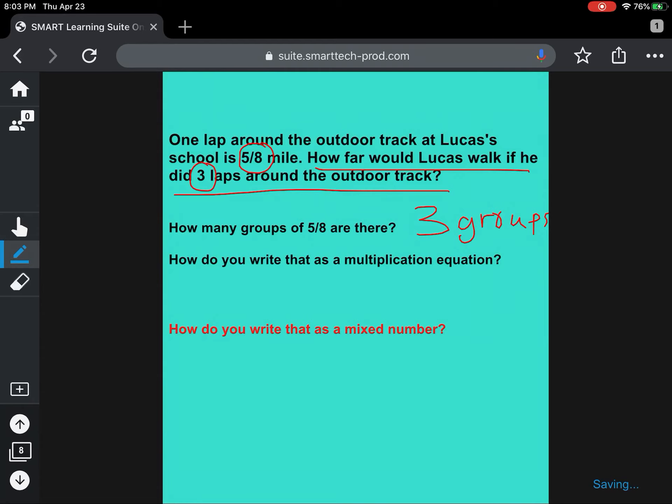So how would you write that as a multiplication equation? Well, I would think three laps times 5/8 of a mile for each lap would equal our total distance, which we are reporting in miles, so I'm just going to say M. So I would like you to pause your video now and solve that equation for me. Three times 5/8. Once you have the answer, turn the video back on.